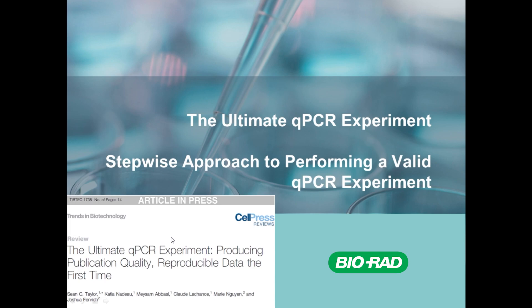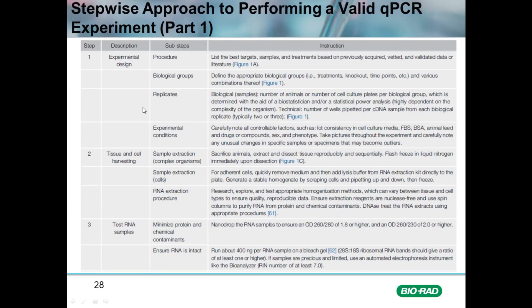In that article there is one table which summarizes the steps required to perform an excellent, solid qPCR experiment to give highly precise, reproducible data. Each of the steps should be followed in a stepwise process from 1 to 6, and starts obviously with the design of the experiment, with reference to figures in the article.